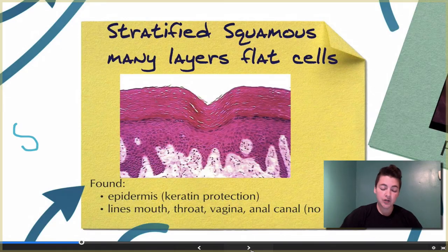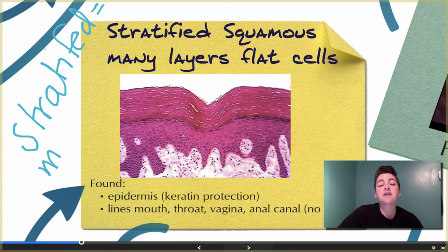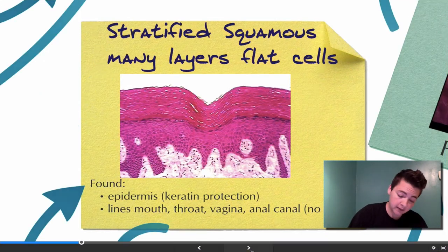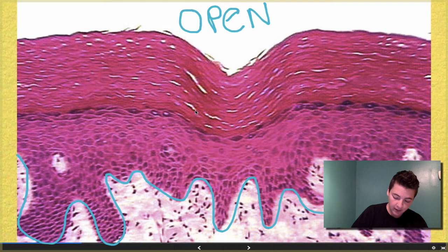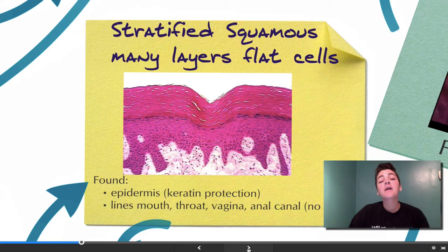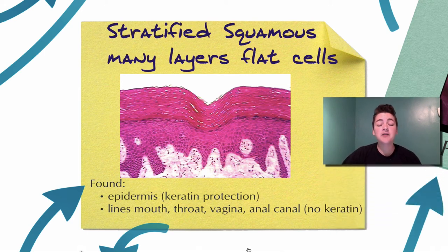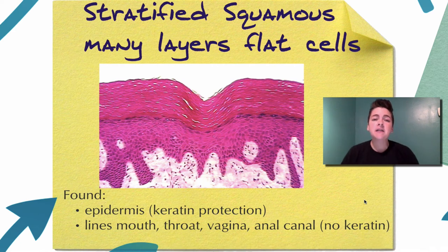Stratified tissues have multiple layers. Stratified squamous means many layers of flat cells. The basement membrane is the area between the dark and the light, and it is undulating, meaning it goes back and forth quite a bit. You can see several layers of cells between the basement membrane and the open space. Stratified squamous is found in the epidermis — the outermost layer of skin — and also lines the mouth, throat, vagina, and anal canal.